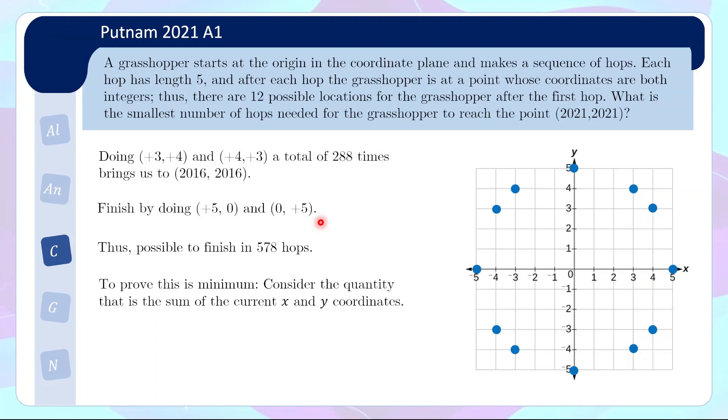To prove that this is a minimum, we consider the quantity that is the sum of the current x and y coordinates. So at the starting point, the quantity is 0, and at the end, the quantity is the sum of these two, so it's 4042. Now looking at each of the 12 options from each point, we see that the quantity could possibly decrease or increase, but it will definitely increase by less than or equal to 7.